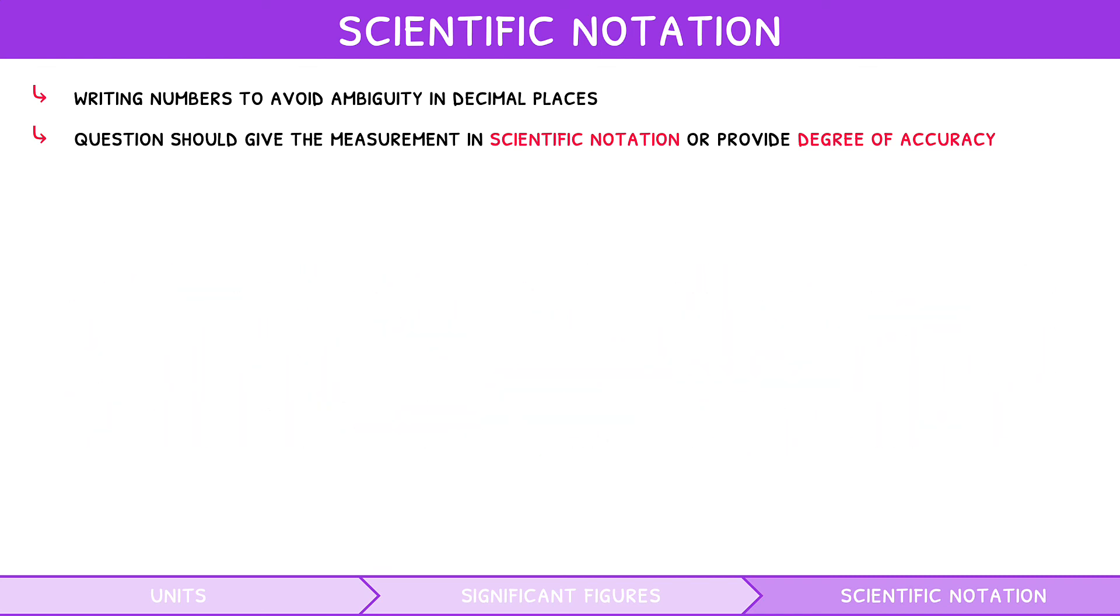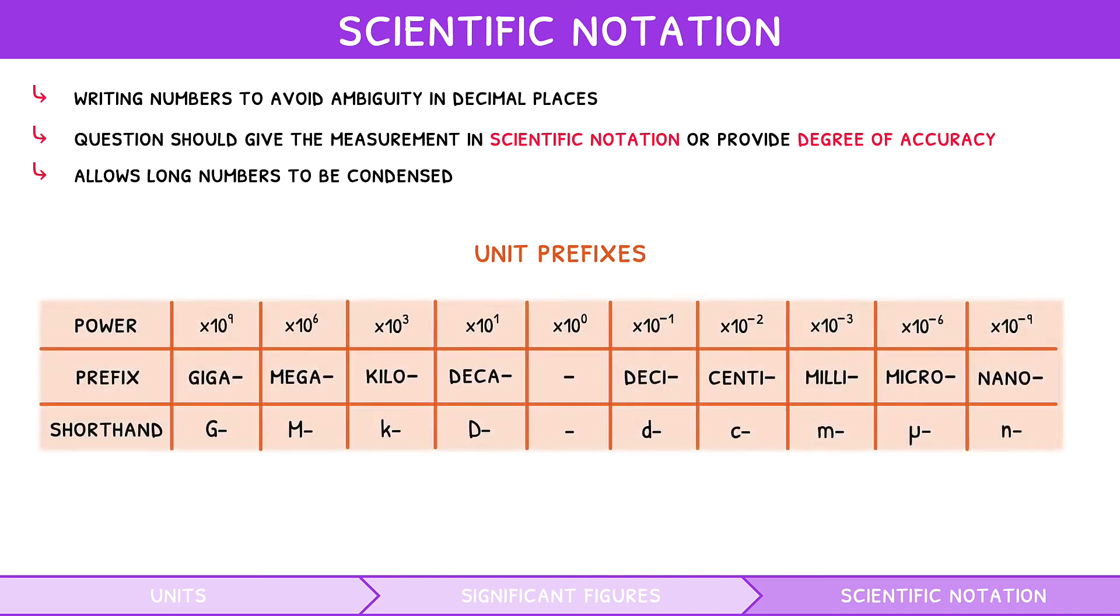As you may see, scientific notation allows long numbers to be condensed. However, we can also use unit prefixes for the same effect. Certain powers of 10 correlate to specific prefixes, as shown in the table below, along with their abbreviations.